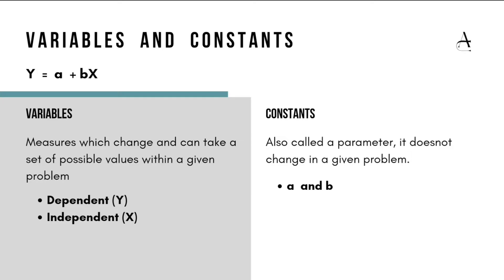This unit deals with a few important terms — not new for any of us, at least from school days. Whatever you know about them, you can write down if a question comes, like differentiating between variables and constants, or derivatives and partial derivatives. For variables and constants, you can start by writing a simple linear equation like y = a + bx. In this, y and x are variables because their values can change, while a and b are constants because their values do not change.